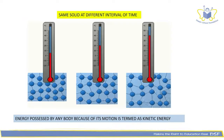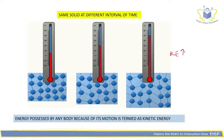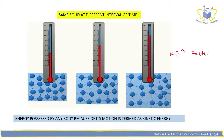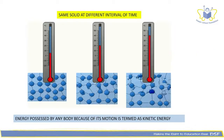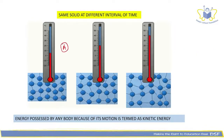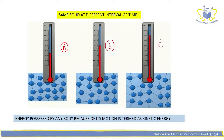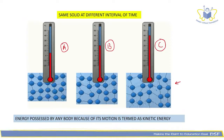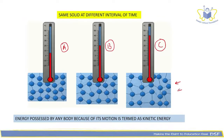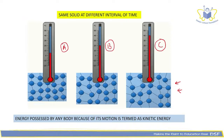When you heat a substance, the heat energy that you are supplying is transferred to the particles and this makes the particles move faster, which also increases its temperature. Energy possessed by a body because of its motion is termed as kinetic energy, which basically means that faster objects have more kinetic energy. So if we increase kinetic energy, we are making the objects move faster — that's exactly what heat is doing to these particles in matter. At different temperatures you can see the change in kinetic energy showcased by the change in the movement or vibrations of these particles.